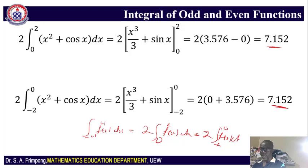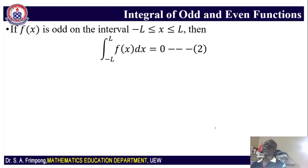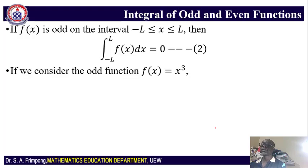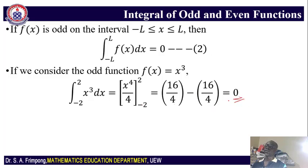Now let's look at the integral of odd functions. If f(x) is odd on the same interval, then the integral from negative l to l is always 0. For example, f(x) = x³ is an odd function. If you integrate that from negative 2 to 2, you get x⁴ over 4 from negative 2 to 2. When you substitute, you get 2⁴ minus 2⁴, which gives you 0. So as long as the function is odd, when you integrate, you get 0.